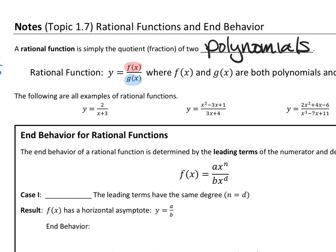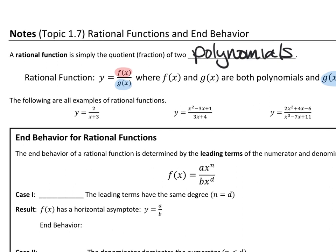Here are just some examples of rational functions so you can see what we're going to deal with. They can be as simple as 2 over x plus 3, or they can be as complicated as a quadratic on top and a linear on bottom, or a quadratic on top and a cubic on bottom. We can get the degrees to be any varying number. As long as there is a polynomial on top and a polynomial on bottom — essentially, as long as the denominator has an x in it — it's a rational function.